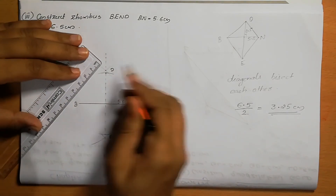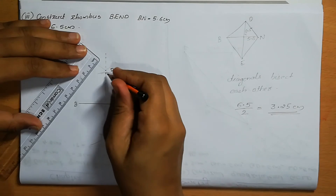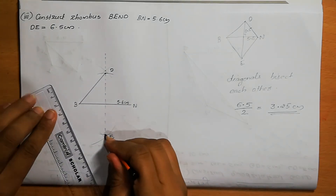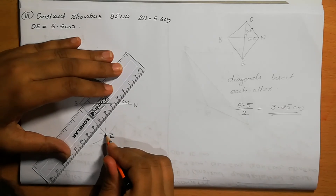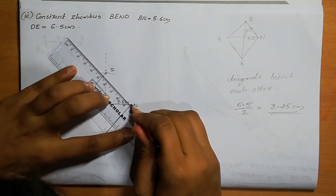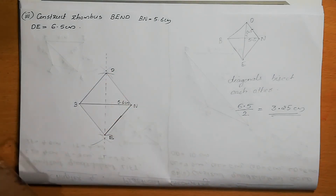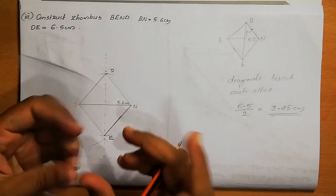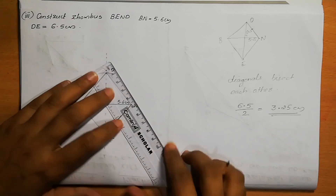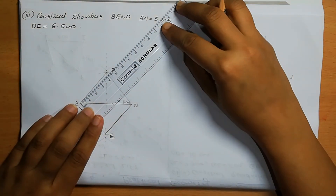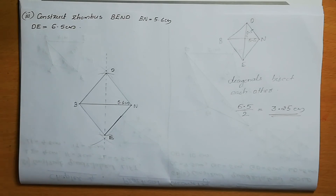Now we can join these points — B, E, N, D — and we got the rhombus. Now we can verify: if all the sides are equal length, we can conclude our construction is correct. We can verify the side length — all four sides are 4 centimetres. So our construction is correct.